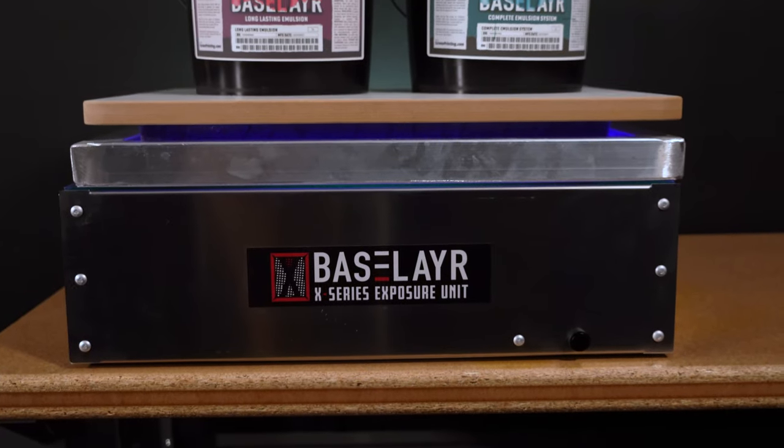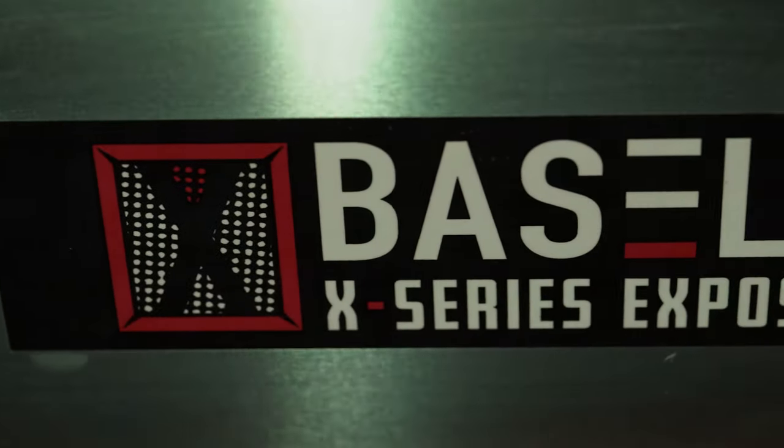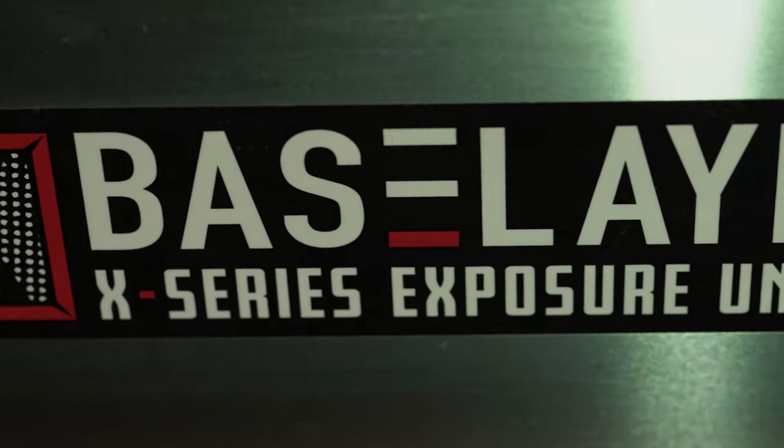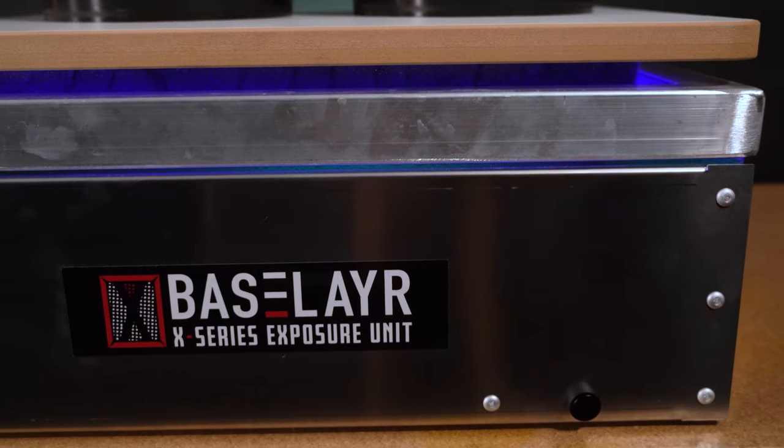Getting the best exposure on a small exposure unit without a lid comes down to getting consistently even pressure across the image area. Without compression, your image becomes blurred, and you lose significant detail in your exposure. To achieve proper even compression, you need to follow these simple steps.